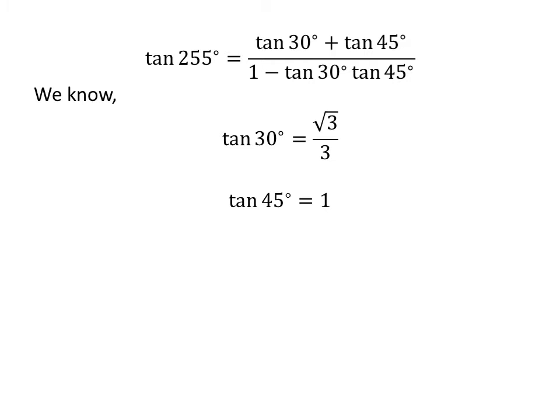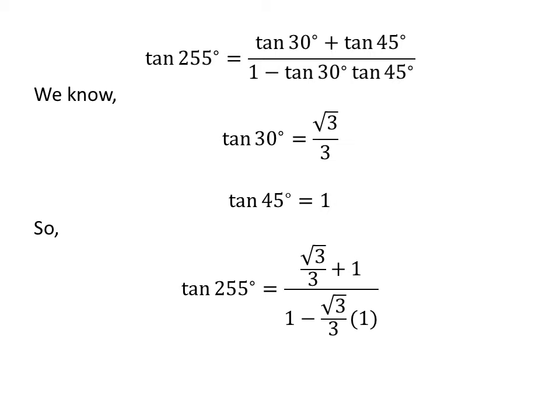As we know, tangent of 30 degrees is equal to square root of 3 upon 3, and tangent of 45 degrees is equal to 1. So we plug in these values, and we get: tangent of 255 degrees is equal to square root of 3 upon 3 plus 1, upon 1 minus square root of 3 upon 3 times 1.